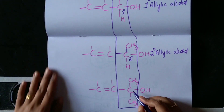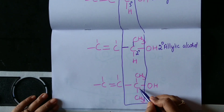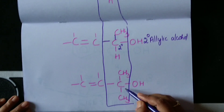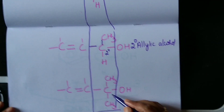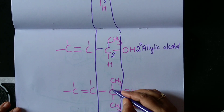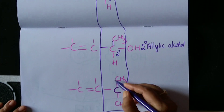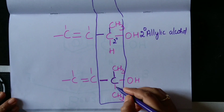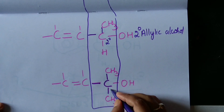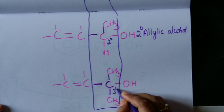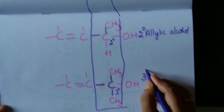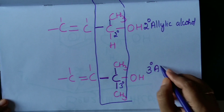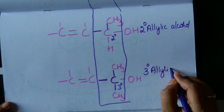Coming to the third case: the central carbon atom is attached to three carbon atoms directly, so it is tertiary. Therefore, this is a tertiary allylic alcohol.